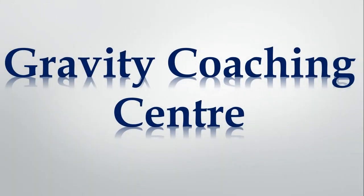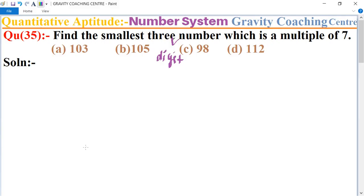Welcome to our channel Gravity Coaching Centre. Quantitative Aptitude, Chapter Number System, Question number 35: Find the smallest three-digit number which is a multiple of 7. In this question, we know that the smallest three-digit number is 100.